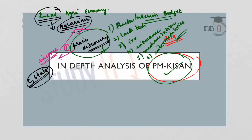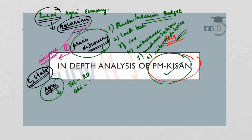Agriculture is a state subject and therefore it is the jurisdiction of state governments to make laws in agriculture. Various state governments have introduced their own schemes — for example, the Telangana government introduced the Rythu Bandhu scheme, the Odisha government introduced the KALIA scheme, and the Madhya Pradesh government introduced the Bhavantar Bhugtan Yojana. So various state and central governments have come out with measures to help farmers, and one such mega scheme was announced in the recent interim budget of 2019.